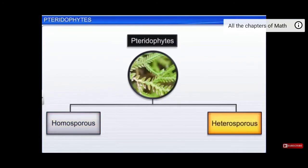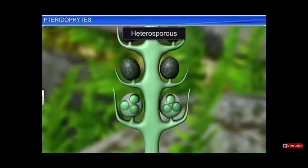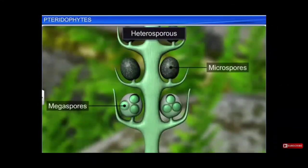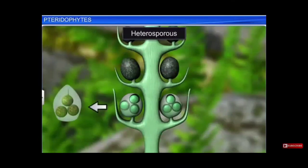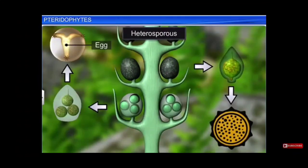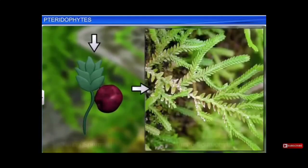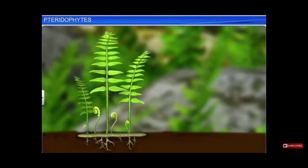Pteridophytes can be homosporous or heterosporous. Homosporous pteridophytes produce spores of a similar kind, while heterosporous pteridophytes produce two different types of spores — large megaspores and small microspores. Megaspores germinate into female gametophytes, which produce eggs, while microspores germinate into male gametophytes, which produce antherozoids. The egg and antherozoid fuse to form a zygote, which develops into a young embryo and then gives rise to a sporophyte. These pteridophytes occupy an important place in the plant kingdom as they were the first plants to have true roots, stems, leaves, and vascular tissues.